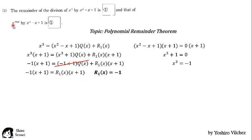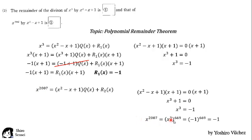For x to the 2007 power, we must do the same steps. The divisor is equal to 0. Multiply by x plus 1 on both sides. And finally get x cubed equal to minus 1. But here we have x to the 2007 power. So 2007 is equal to 3 times 669. x cubed is equal to minus 1. To the odd number is still minus 1.